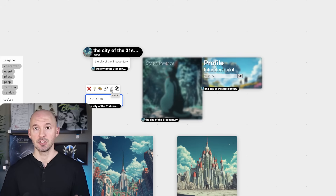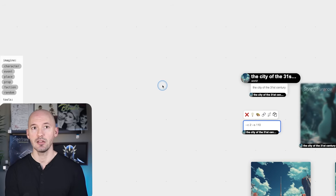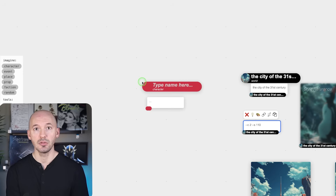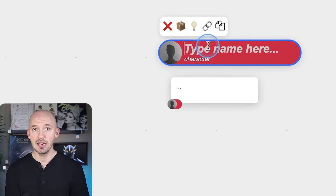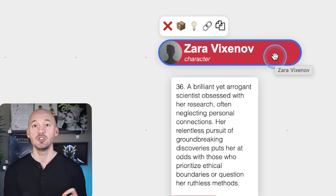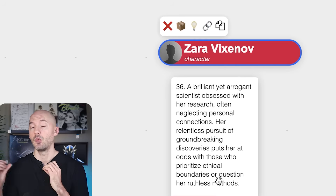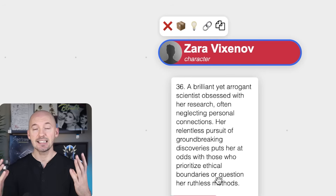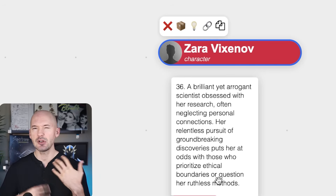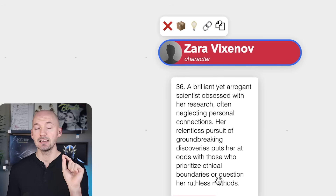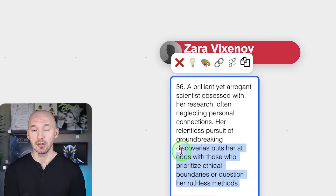Let's create some characters. Click on character, click anywhere on the board, and a character display appears. Jump right into the light bulb — it generates a character concept: 'Zara Vixenov, a brilliant yet arrogant scientist obsessed with her research, often neglecting personal connections. Her relentless pursuit of groundbreaking discoveries puts her at odds with those who prioritize ethical boundaries or question her ruthless methods.' There are language models buried within this canvas — that's why it's such a powerful world-building tool. I don't recommend completely relying on it; aim for more of a collaboration with the AI.